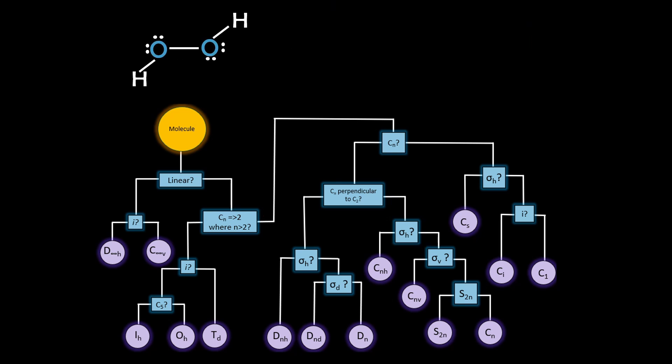Example 2, hydrogen peroxide. It's not linear, only has one C2 axis, and no mirror planes. So it's not linear, has no rotational axes higher than C2. It has a single C2 rotational axis with no perpendicular Cn axis, and no mirror planes. That makes it C2.